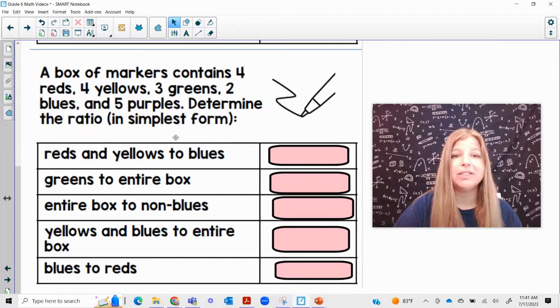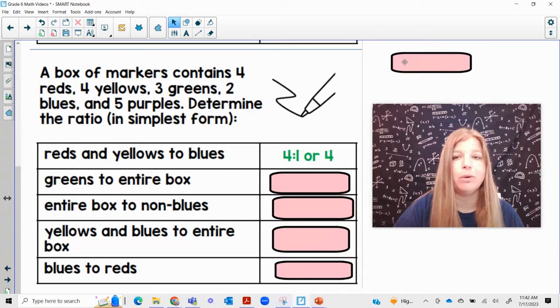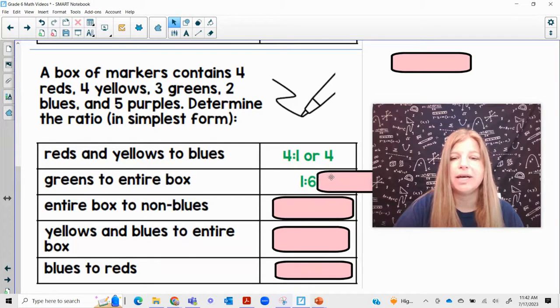And the last one. A box of markers contains four reds, four yellows, three greens, two blues, and five purples. Determine the ratio in simplest form. Reds and yellows. So that means we need to add up reds and yellows. So four plus four is eight. To the blues, two. Eight to two simplifies by two. So that would be four to one or four. Greens to the entire box. It says there's three total greens. The entire box is four, plus four is eight, plus three is 11, plus two is 13, plus five is 18. So greens, three to 18. Three to 18 would simplify to one to six.